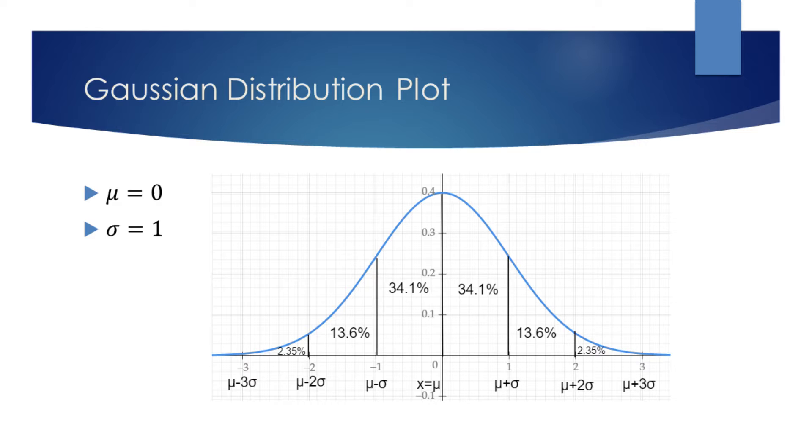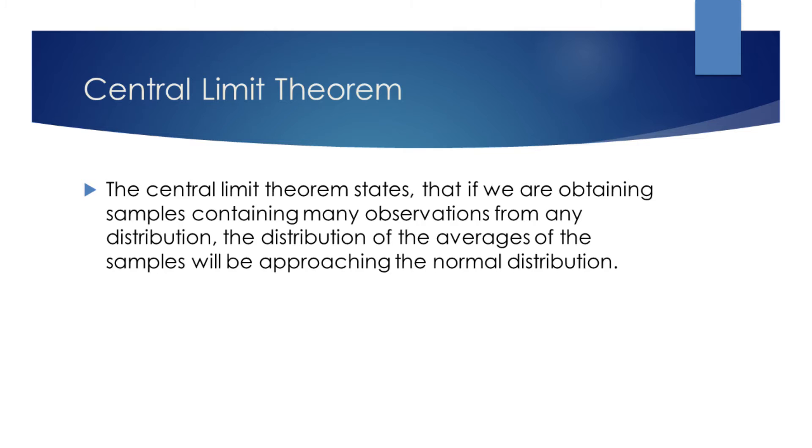The reason this distribution is popular in probability is because of the central limit theorem. The central limit theorem states that if we are obtaining samples containing many observations from any distribution, the distribution of the means of these samples will be approaching the normal distribution.